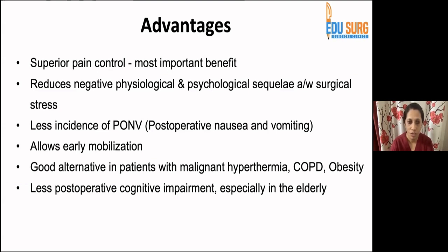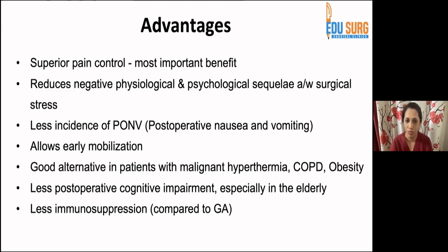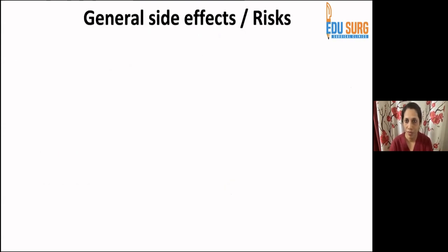There is less immunosuppression compared to general anesthesia, which is particularly important for diabetic patients, as it can reduce post-operative infections. Supplementing with a peripheral anesthesia technique can make the post-operative course smoother. Now let's look at general side effects and risks — these apply to both peripheral and central neuraxial techniques.